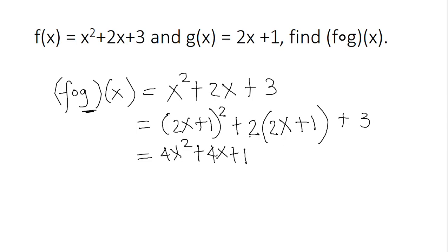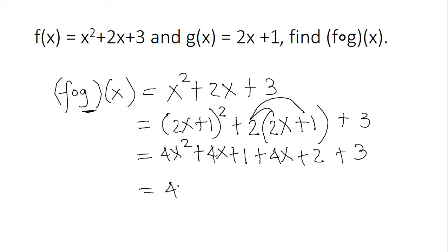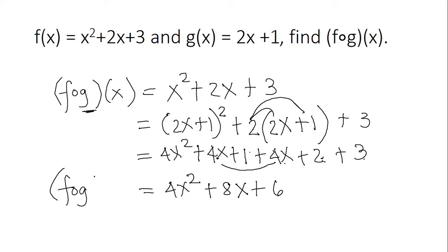We distribute 2 inside the second part: 2 times 2x equals 4x, and 2 times 1 equals 2. We copy the plus 3. Combining all like terms: 4x squared, then 4x plus 4x equals 8x, then 1 plus 2 plus 3 equals 6. So f circle g of x equals 4x squared plus 8x plus 6.